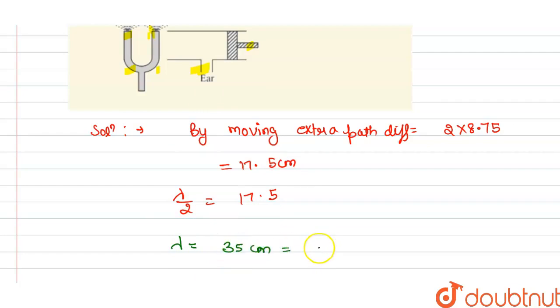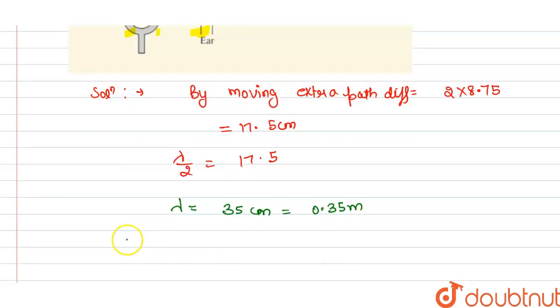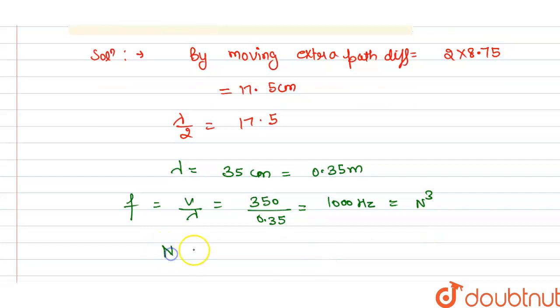And we know that frequency is velocity divided by wavelength. So this is 350 divided by 0.35. From this we get this is equal to 1000 hertz, and this is equal to n cube.